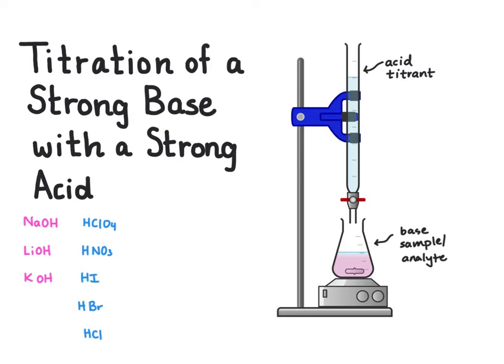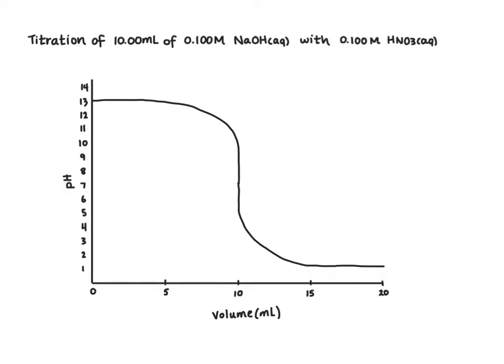We'll talk about indicators, but what you see here is an indicator close to the endpoint where we have some color change happening. We're going to look at the titration of 10 milliliters of 0.1 molar sodium hydroxide with 0.1 molar nitric acid.